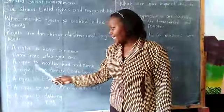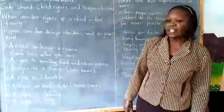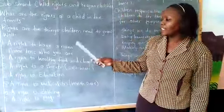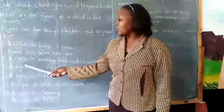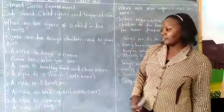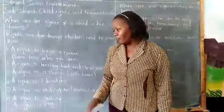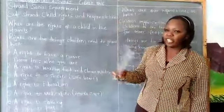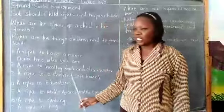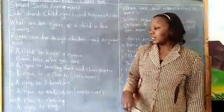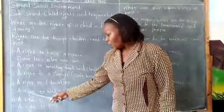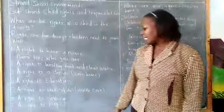Another right is a right to shelter, and shelter is where we live — a house. We have a right that we must have a safe home, provided by our parents. We also have a right to education — you have a right to be taken to school to learn.